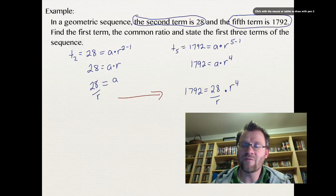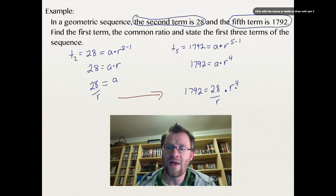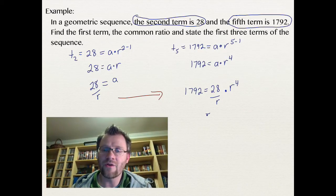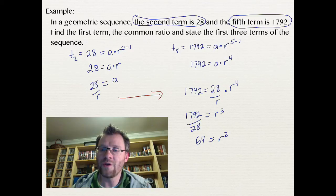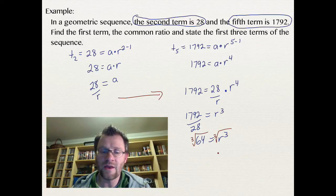Now by using exponent rules, I can combine R to the fourth and this R in the bottom of this fraction, and that just gives me an R to the third power. I can also get rid of this 28 by dividing both sides by 28. So I get 1792 divided by 28. That happens to be 64, and that's R cubed. If I now take the cube root of both sides, because I have an R cubed and I just want a regular R, I end up getting R equaling 4.